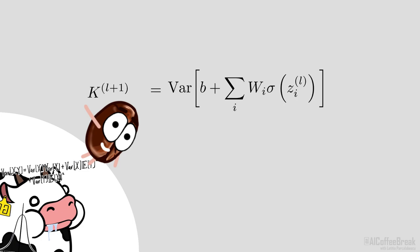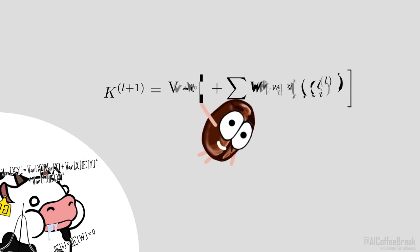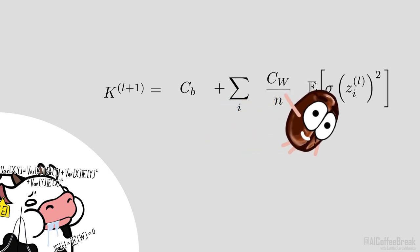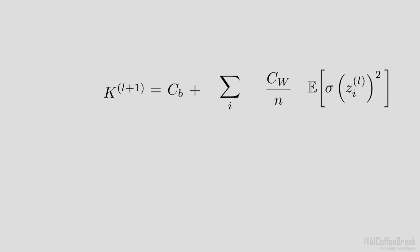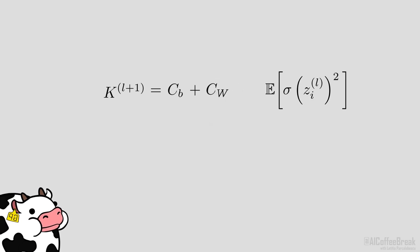And on the right-hand side, both the bias and the weights have predefined variances, c_b and c_w divided by n respectively. All the neurons have the same distribution and are independent, so we can ignore the index i. And that's it. The left-hand side is the variance of layer L plus 1 and the right-hand side is a function of the variance of layer L, because the expectation value is computed using a Gaussian distribution with that variance. Let's also appreciate how simple this expression is. We've condensed a complicated high-dimensional neural network into a simple one-dimensional integral formula.